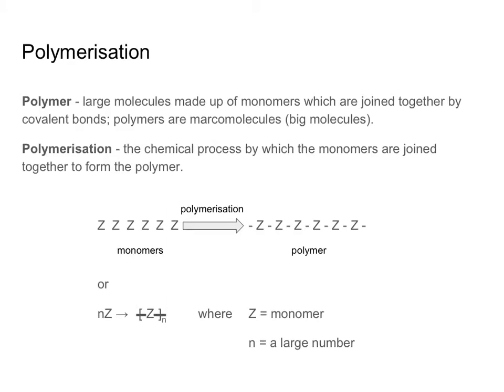Before we get into this, we need to talk about some key terms. Polymers are large molecules that are made up of smaller building blocks called monomers. These monomers join together through covalent bonds to form large chains and other structures. Polymers themselves fall under the category of molecules known as macromolecules — macro meaning big, so macromolecule meaning big molecule.